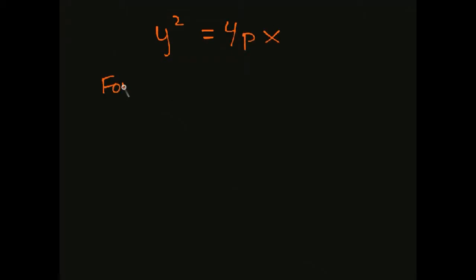And then the focus is going to be, instead of 0p, because this is a horizontal axis the focus is going to be p0. We're still only going to deal with things whose vertex is the origin. That's the only thing we're dealing with here, and that's what we get out of this equation right here.